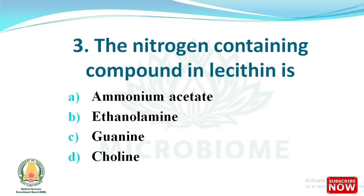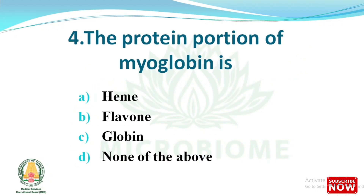Next question: the nitrogen-containing component of lecithin is which of the following? The options are ammonium acetate, ethanolamine, guanine, and choline. The right answer is option D, choline. Next question: the protein portion of myoglobin is which of the following? The options are heme, flavin, globin, none of the above. The right answer is option C, globin. Myoglobin is a protein found in the muscle cells of animals; it functions as an oxygen storage unit.